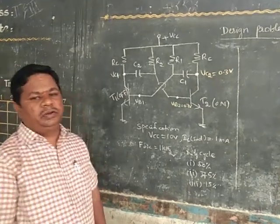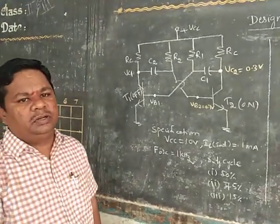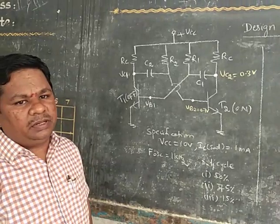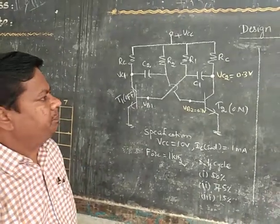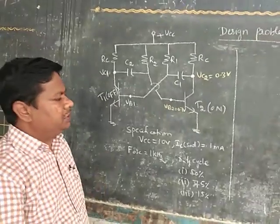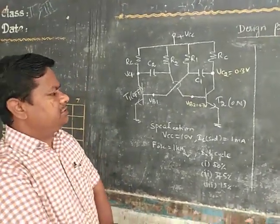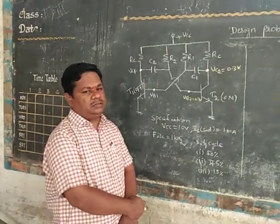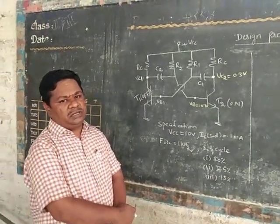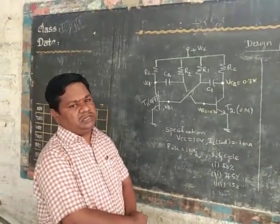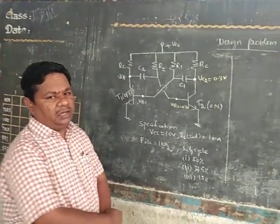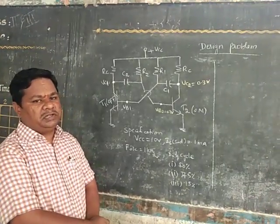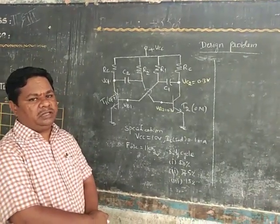Good morning all. Today we are going to discuss about designing of an astable multivibrator circuit. Already you know that an astable multivibrator is a square wave oscillator. In this circuit, both output states are semi-stable states. Continuously the circuit itself changes from one state to another state.